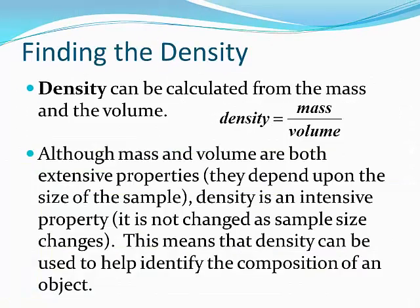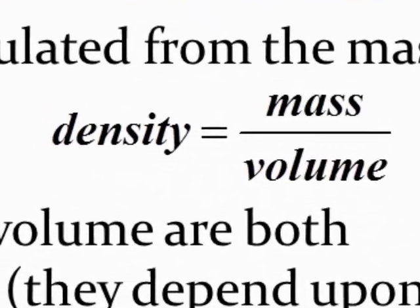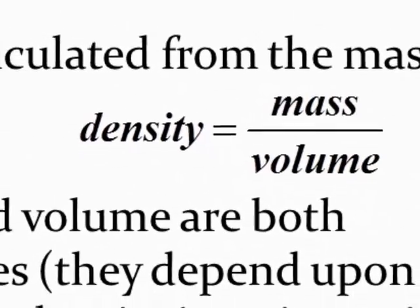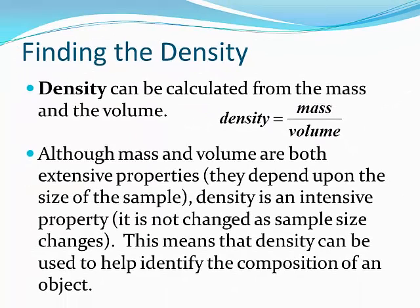How do we calculate density? It can be calculated from the mass and the volume using the formula: density equals mass divided by volume. Although both mass and volume are extensive properties — meaning they depend upon the size of the sample — density is not an extensive property. It is an intensive property, meaning it does not change as the sample size changes. So density can be used to help identify the composition of an object, while mass and volume by themselves cannot.